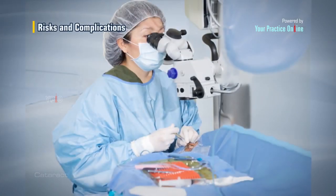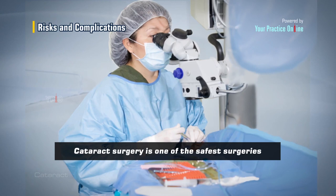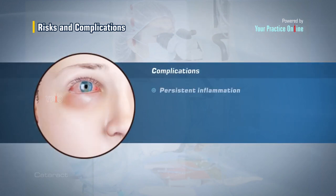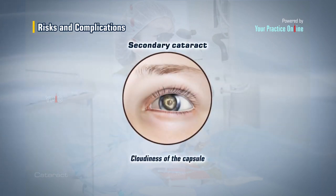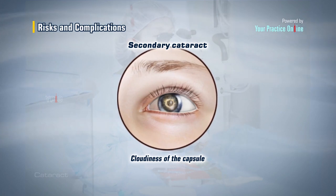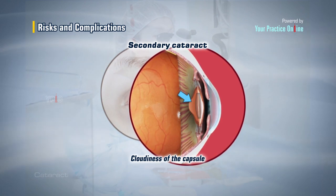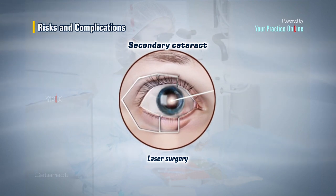Cataract surgery is one of the safest surgeries to undergo. Complications are rare but can occur and need to be addressed as soon as possible to prevent any vision loss. Complications can include persistent inflammation, infection, increase in intraocular pressure, or peeling of the retina at the back of the eye. In rare cases, the cataract seems to reappear after a few months or years following surgery, with a cloudy appearance in the field of vision. This occurs due to cloudiness of the capsule and not the implanted plastic lens — it is called a secondary cataract and can be treated by a simple laser surgery to create a hole in the lens capsule where the cloudiness is visible.